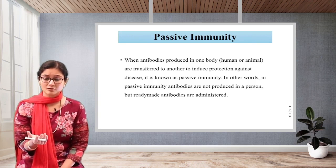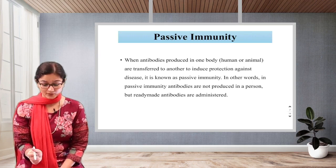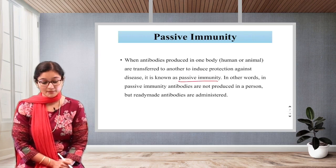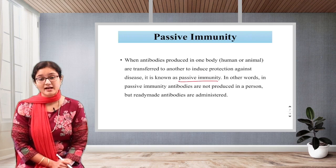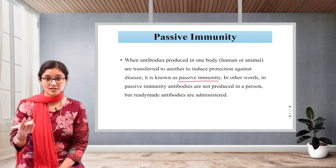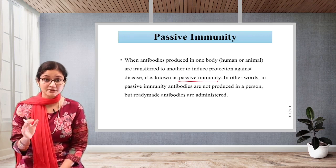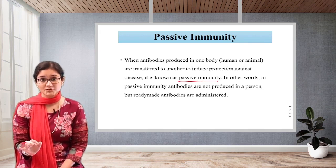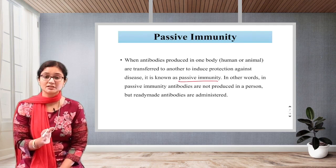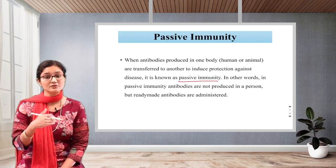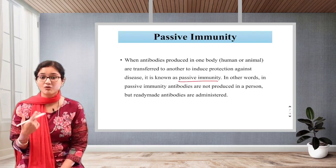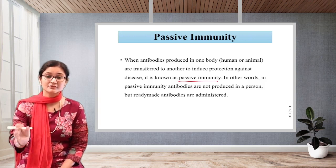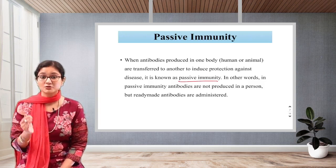How does she transfer it? Through milk — through breast milk or through the placenta. That is called passive immunity. In other words, in passive immunity, antibodies are not produced in the person but ready-made antibodies are administered. One form is where it is transferred from the mother to the child; sometimes we also administer injections — directly instilling antibodies inside the body.